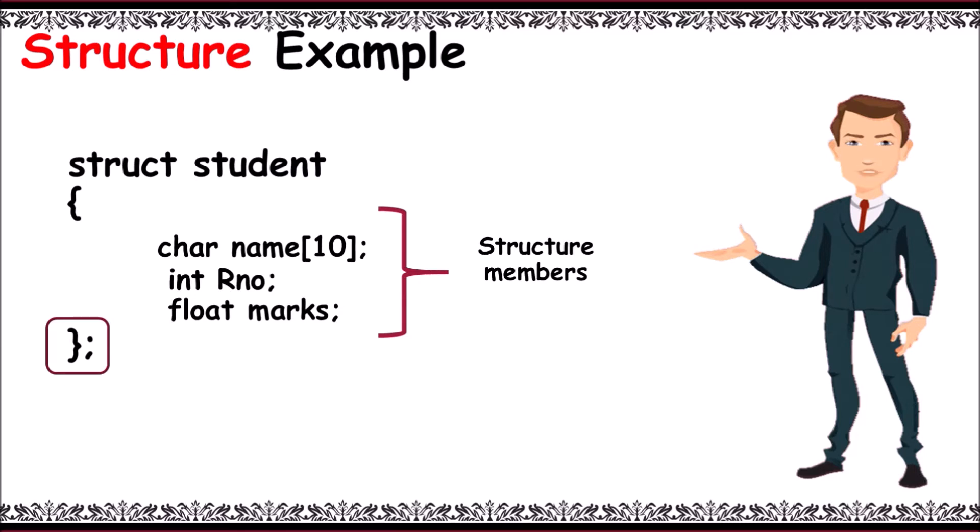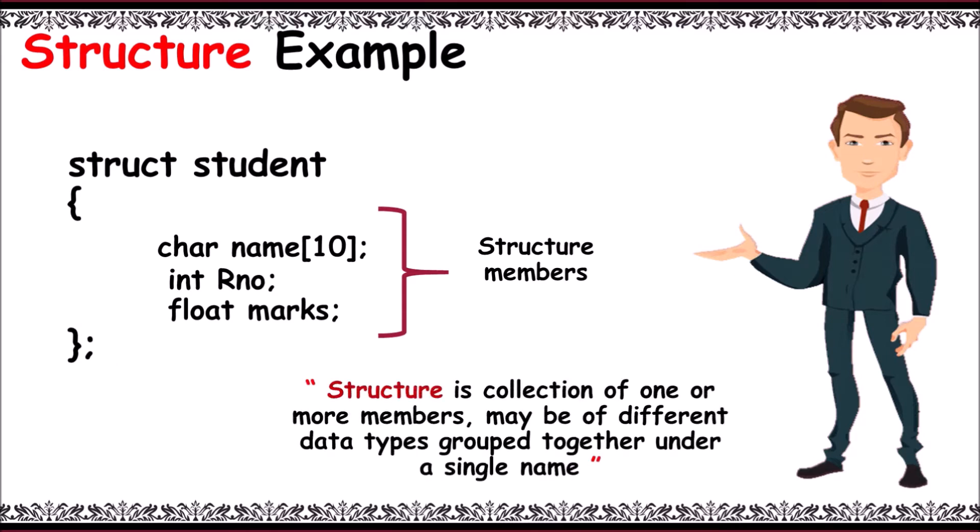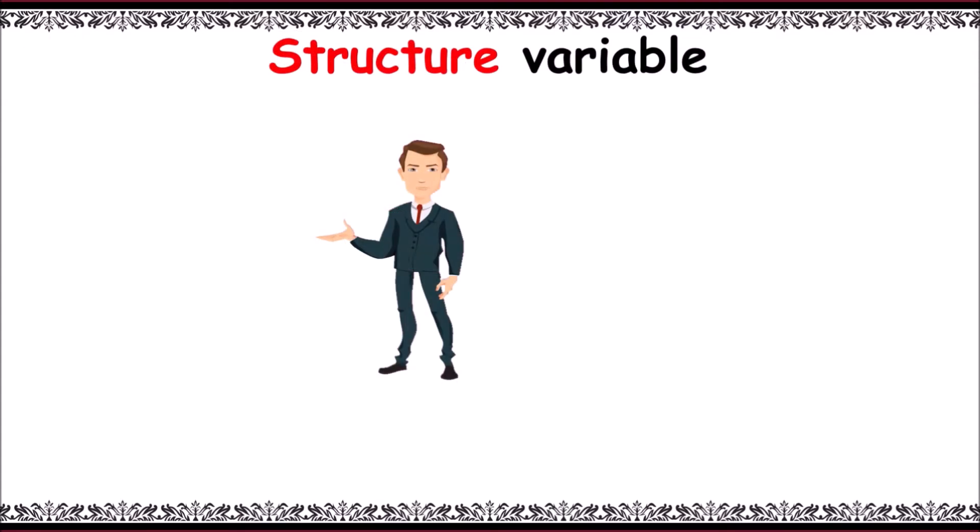We define a structure as a collection of one or more variables, which may be of similar or different data types, grouped together under a single name. There are two ways to create a structure variable.